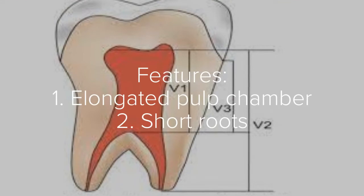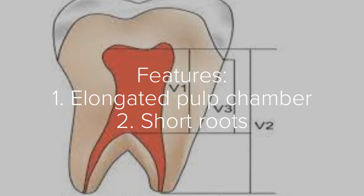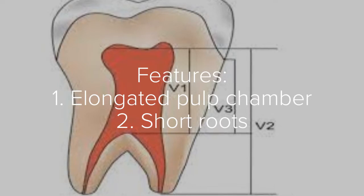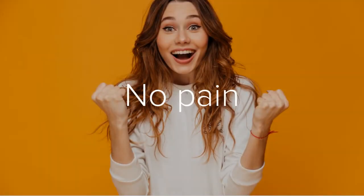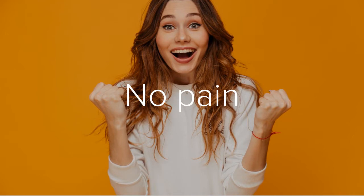Taurodontism is a condition that affects the pulp chamber. There are only two features that distinguish it from any other clinical condition: having an elongated pulp chamber and short roots as well. The most exciting feature of this condition is that patients will not complain of any pain — it's just like a normal tooth with a normal pulp and normal dentine.